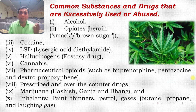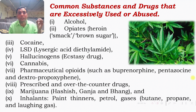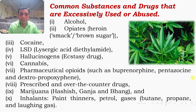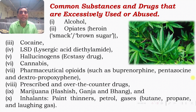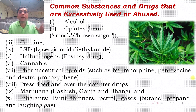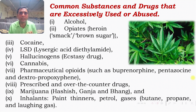Let us now discuss some common substances and drugs excessively used or abused by people. Alcohol is the most highly abused substance across the globe, across genders and age groups, because it is freely available and even government supports its sale. Then there are opiates such as heroin, smack, and brown sugar — though illegal, they are easily available in black markets. There is a film, Udta Punjab, which is a mirror image of society on this issue.